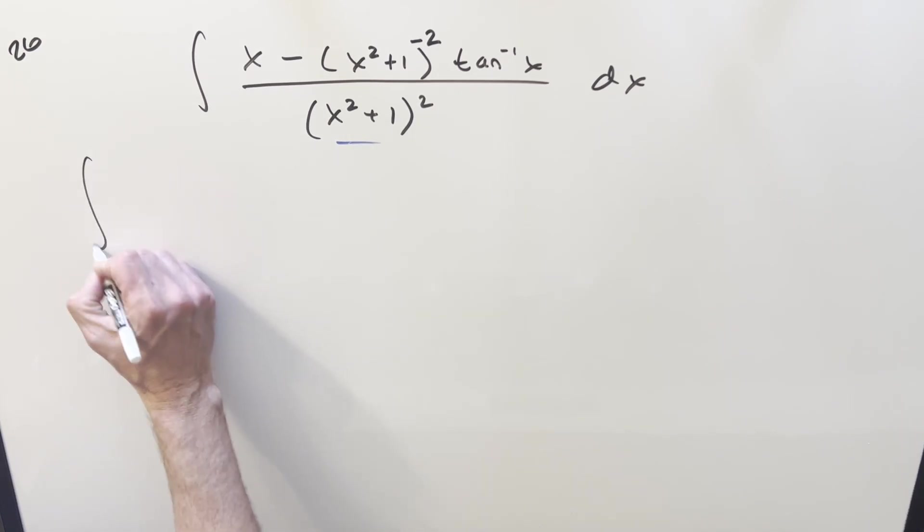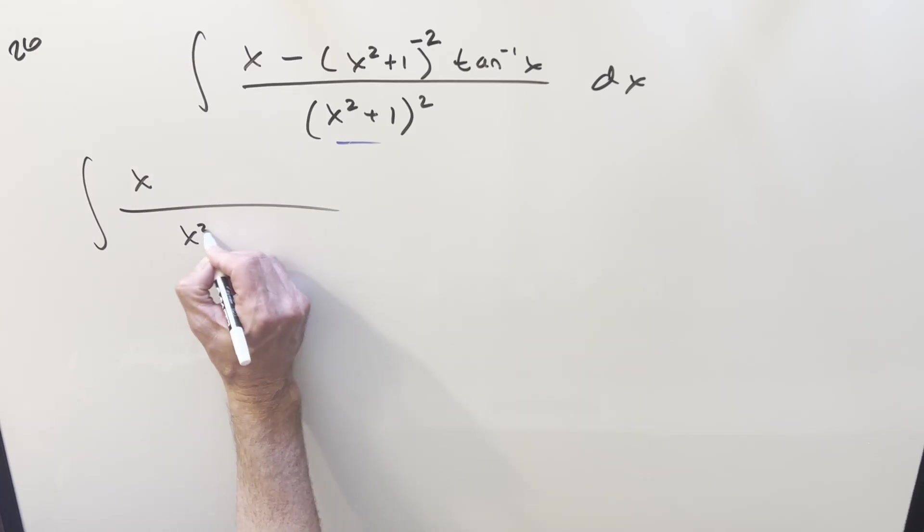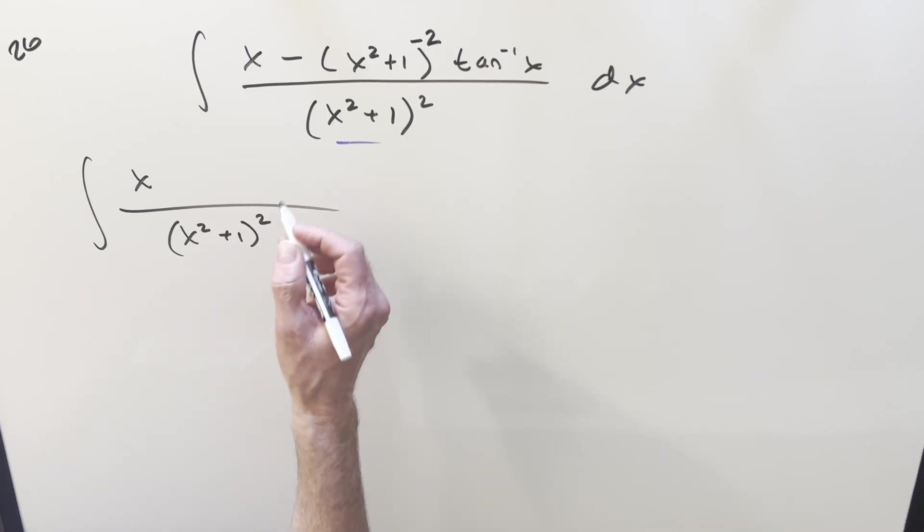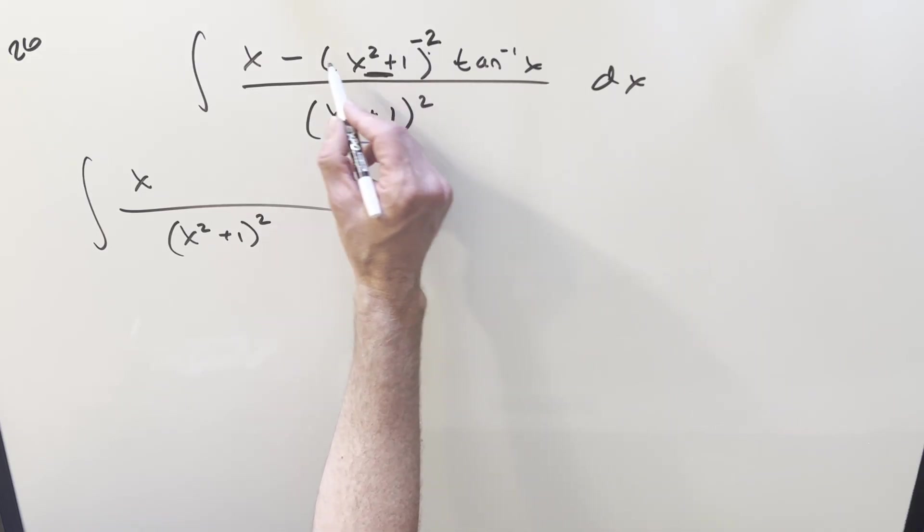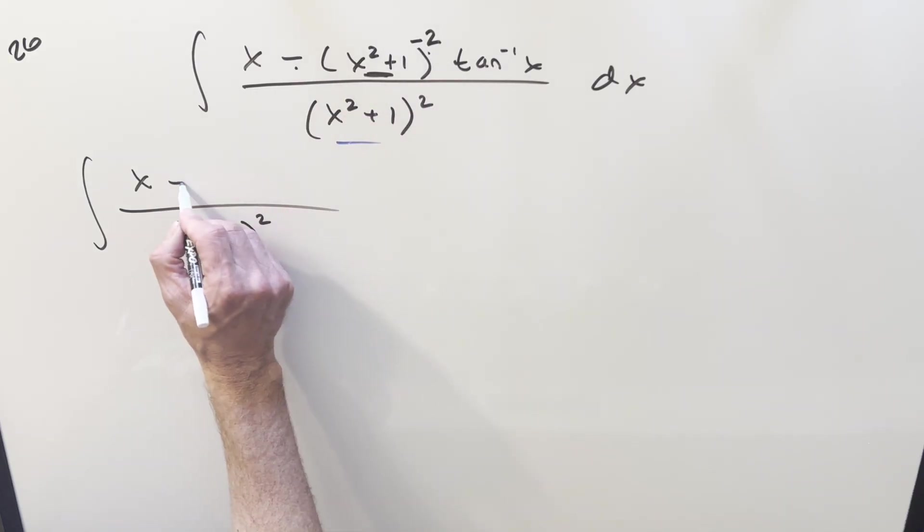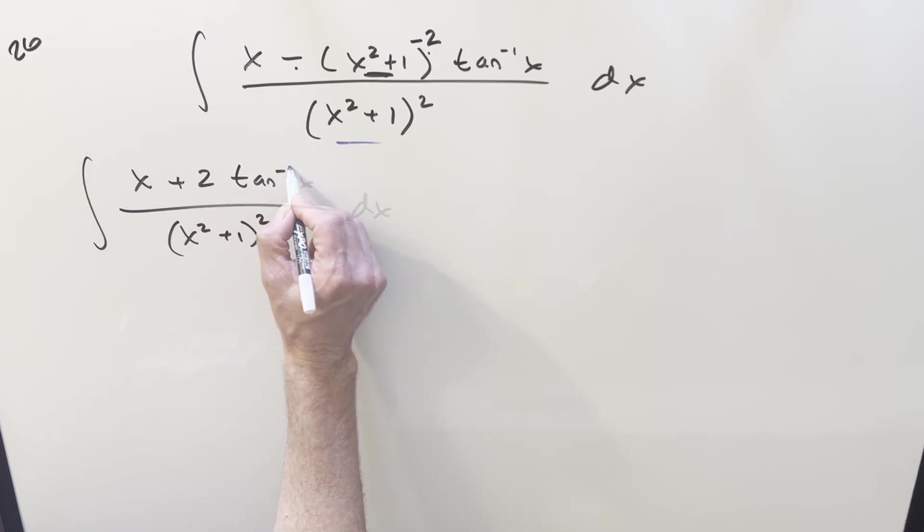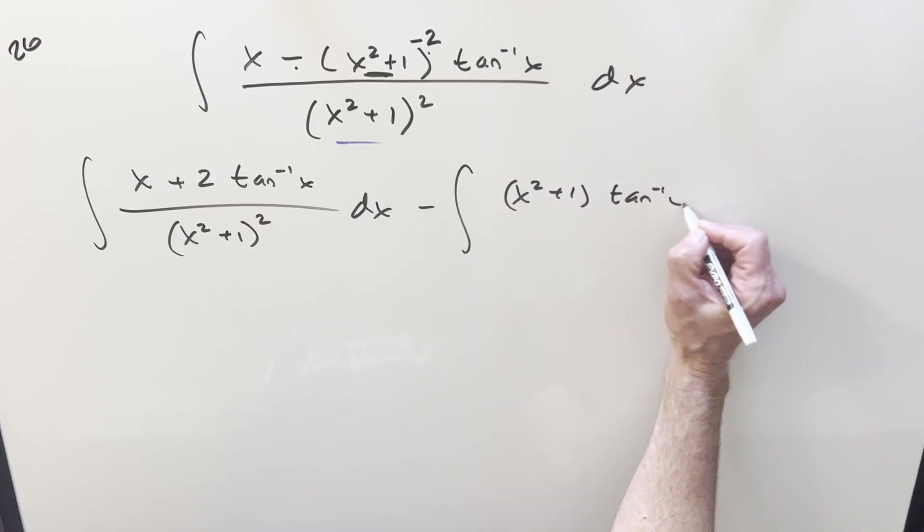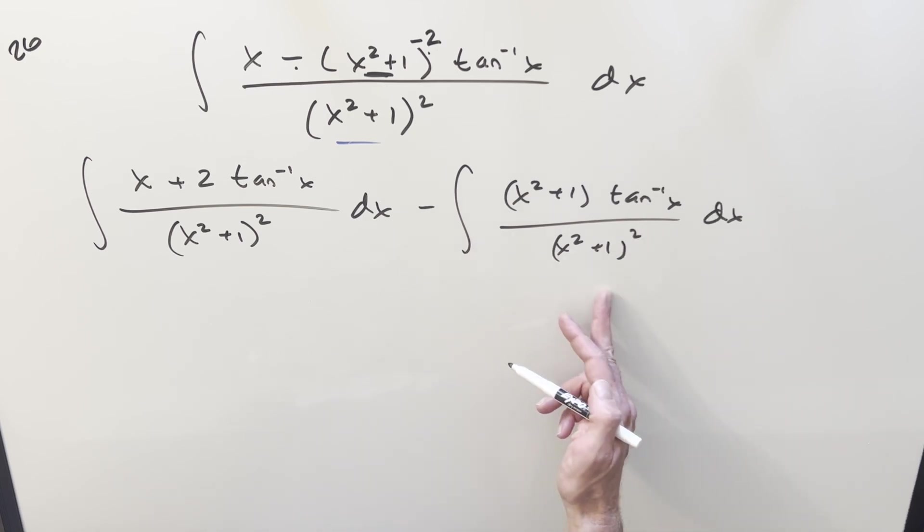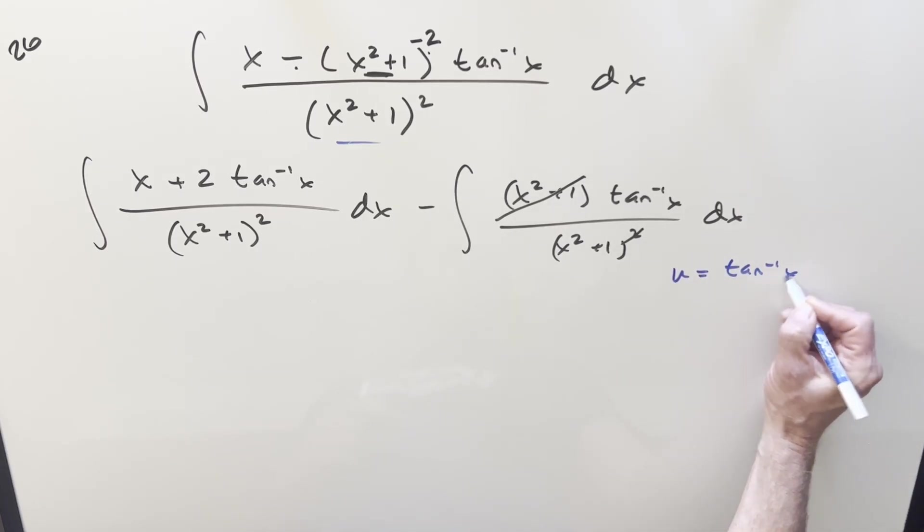But first, I want to split this up into two integrals. We're going to have the same denominator in each. It's going to be (x² + 1)². Now, for this one, we've got the x. We're going to leave this part to another integral. We're going to use this minus 2. So minus times minus 2 is going to be plus 2 arctan(x) right here. And then for the second integral, we're just going to minus (x² + 1)arctan(x) over this (x² + 1)². So this right integral is going to be really simple, because we cancel one of these with one of these. And this is just going to be the u substitution I just mentioned.